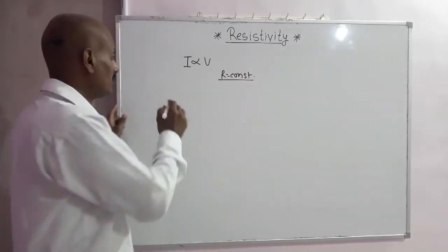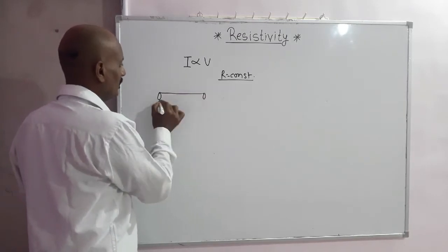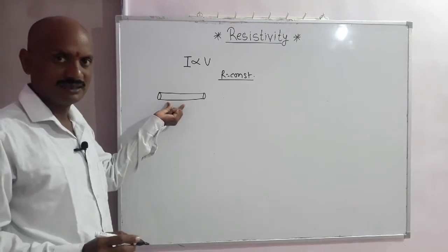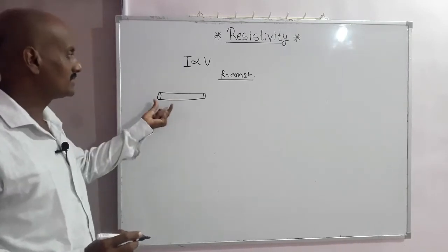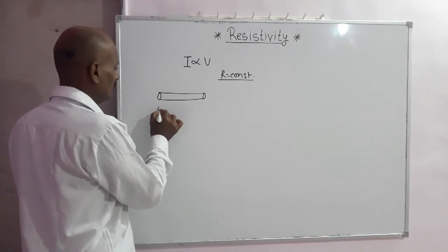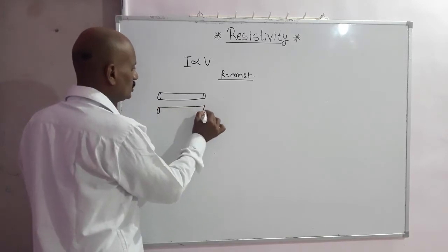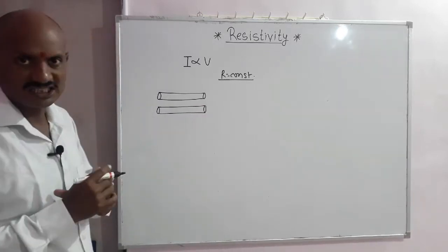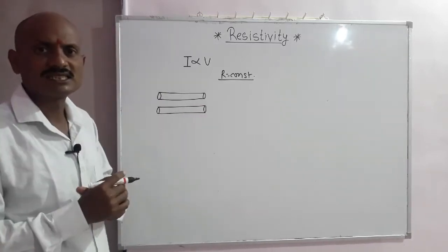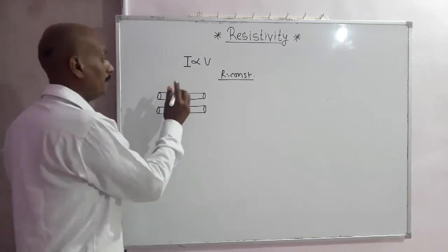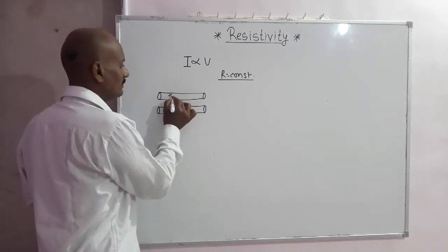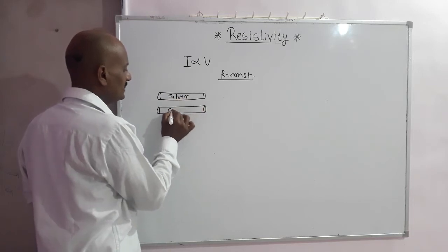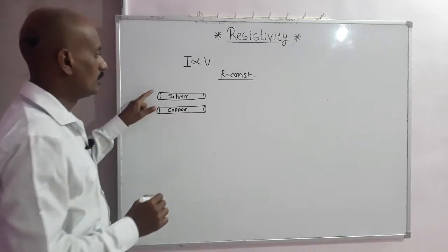If material is the same, with the same length, area of cross-section, and temperature, R is constant. But if I have two materials — both with the same length and same area of cross-section — but these two wires are made up of different materials: this wire is made up of silver and this is made up of copper.